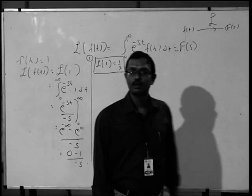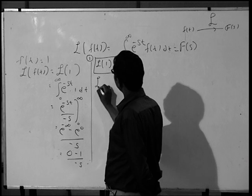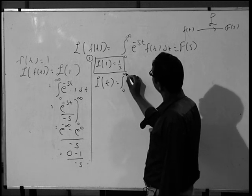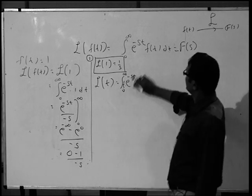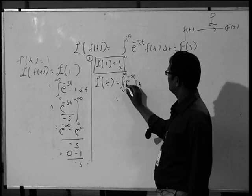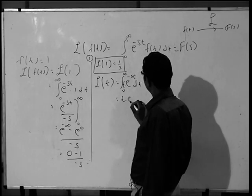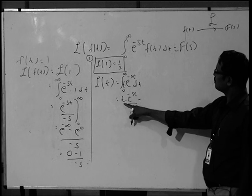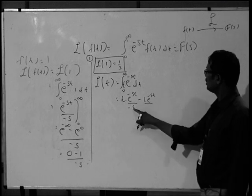Now consider another function: Laplace transform of t. L of t equals the integral from 0 to infinity of e raised to minus st into t dt. Here, consider t as the first function and e raised to minus st as the second function. This becomes t into e raised to minus st divided by minus s, minus the derivative of t which is 1, into e raised to minus st divided by minus s, integrated.